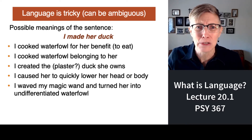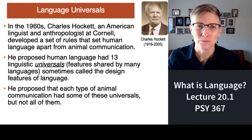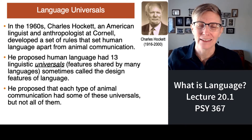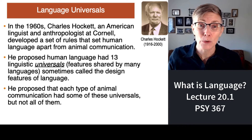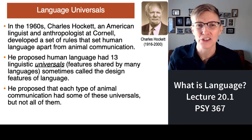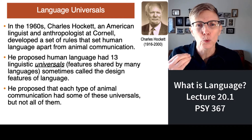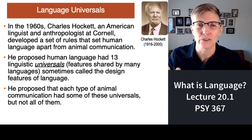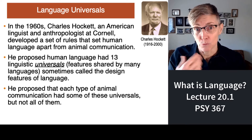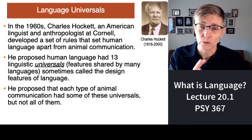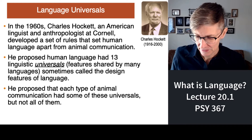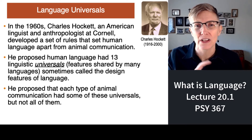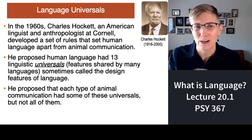How do we communicate anything? Well, according to Charles Hockett, an American linguist and anthropologist, there are certain rules that are universal. He called them universals. Human language has more universals than other kinds of language. I'm going to tell you about just a few of the universal rules that apply to language.